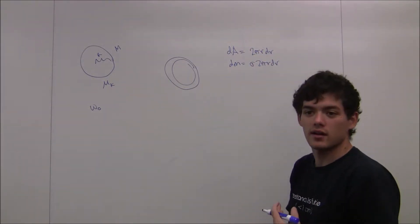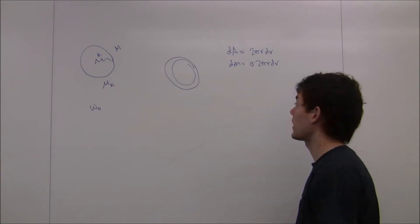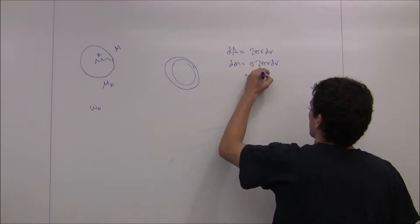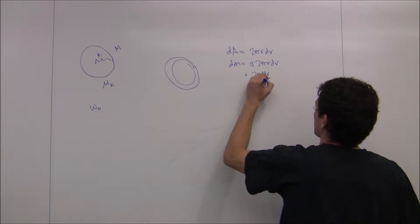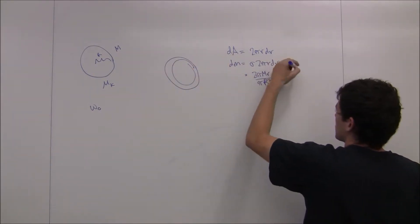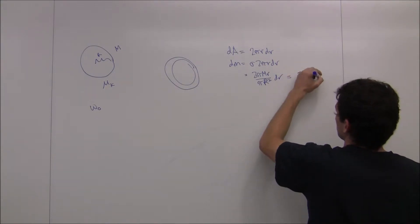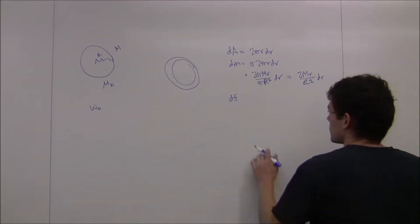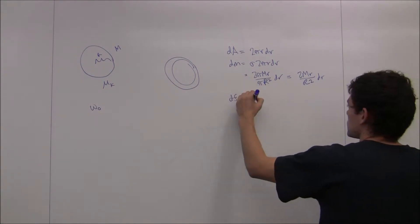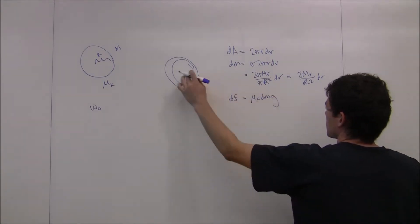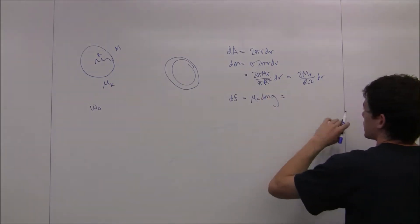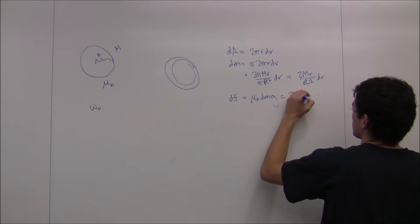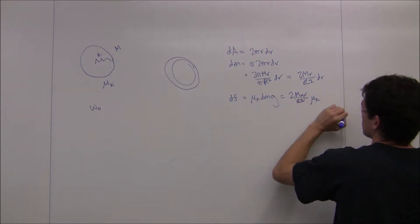Sigma is going to be the mass divided by the area, so m over pi R squared. So this is going to be 2 pi m r over pi R squared for the full radius, which gives us dm = 2m r over R squared dr. So this tells us that dF, the infinitesimal friction force, is going to be mu sub k times dm times g on this infinitesimal ring, which is going to be 2mg r over R squared times mu sub k dr.